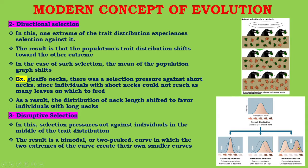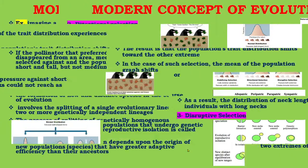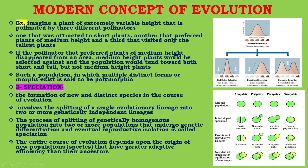Number three is disruptive selection. In disruptive selection, selection pressure acts against individuals in the middle of the trait distribution, and the result is a bimodal or two-peaked curve. For example, imagine a plant of extremely variable height pollinated by three different pollinators: one attracted to short plants, another preferring medium height, and a third visiting only the tallest plants. If the pollinator preferring medium-height plants disappeared, medium-height plants would be selected against and the population would tend toward both short and tall but not medium height. Such a population in which multiple distinct forms exist is said to be polymorphic.